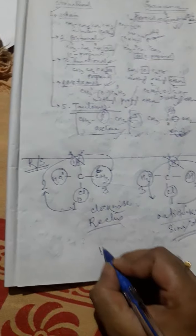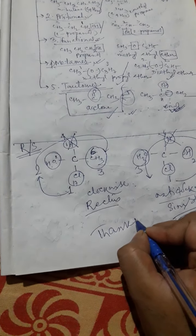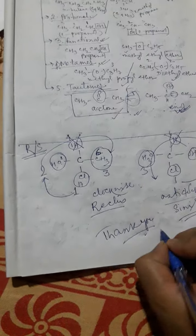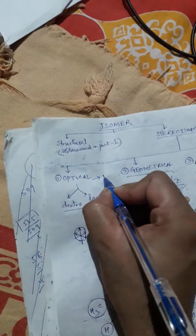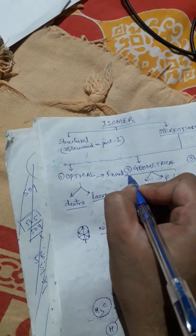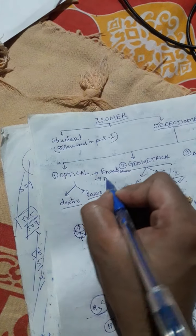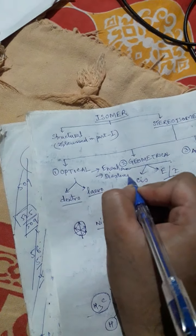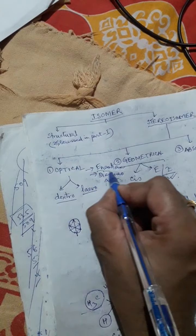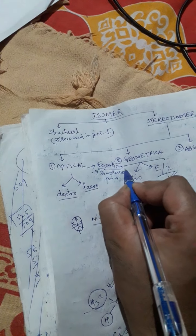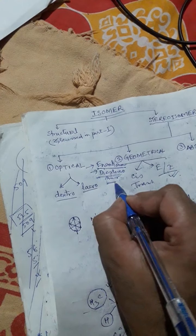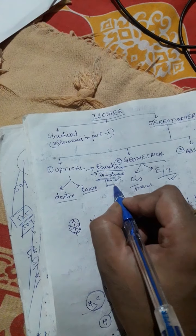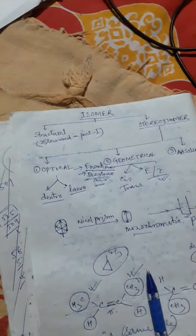Thank you for watching. If you have any questions, you may ask. Another term you may find in optical isomerism: enantiomer and diastereomer. Enantiomer means non-superimposable mirror images, and diastereomer means non-superimposable non-mirror images. Thank you.